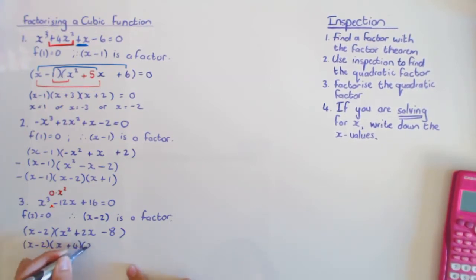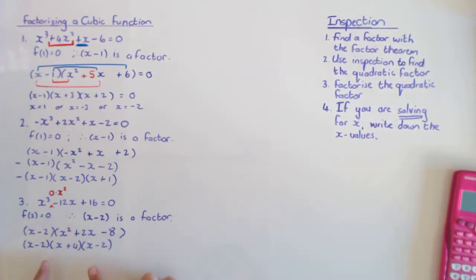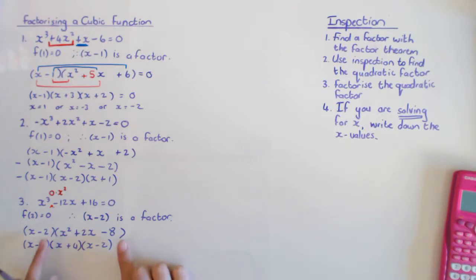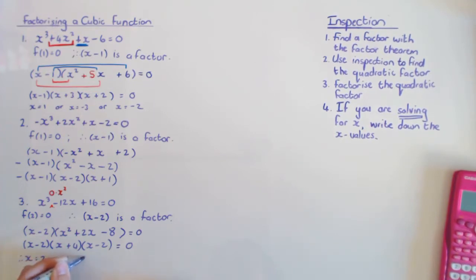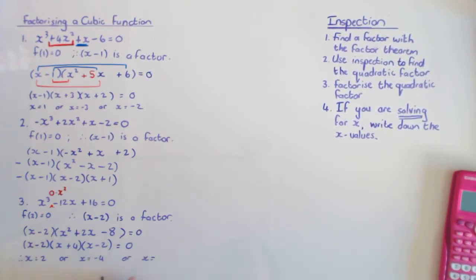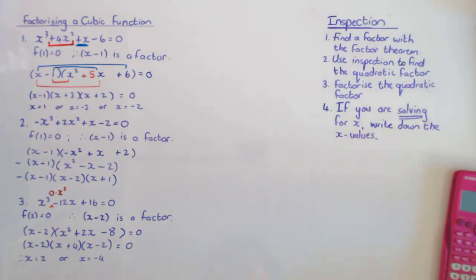I must factorize the quadratic factor, which gives x plus 4 times x minus 2. If solving for x, I write: x equals 2, x equals negative 4, or x equals 2. Since x equals 2 appears twice I don't need to write it twice, so the solutions are x equals 2 or x equals negative 4.